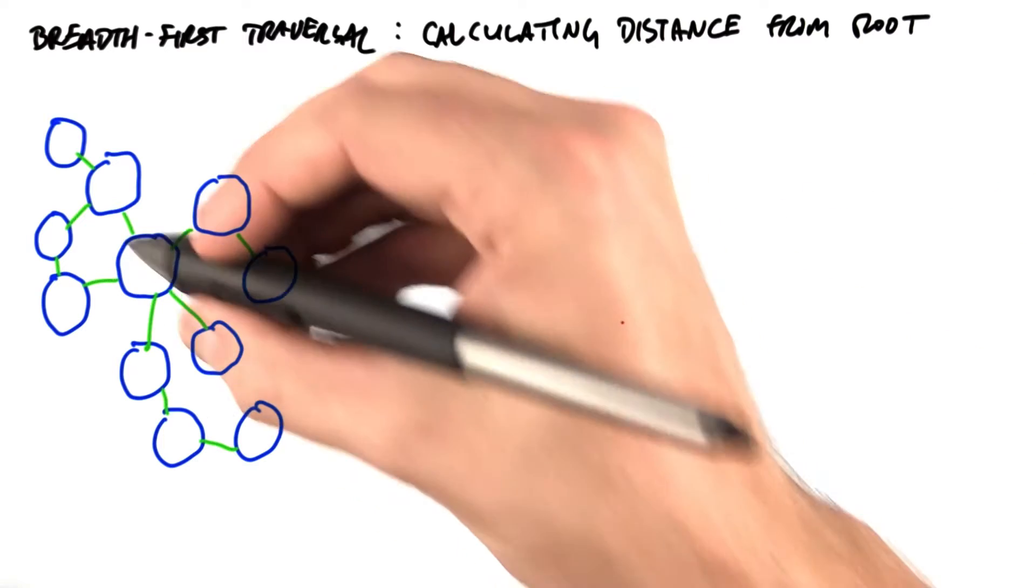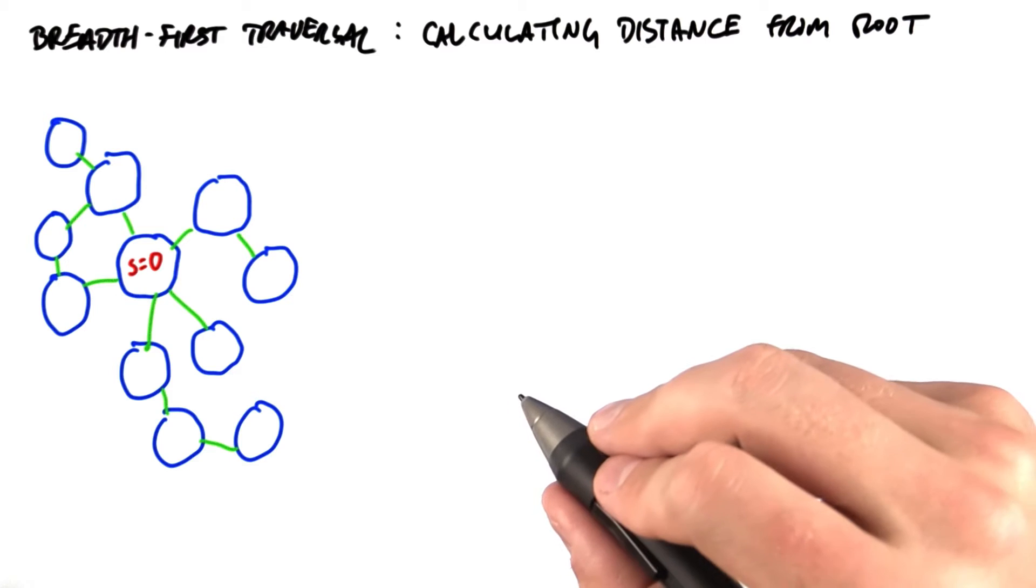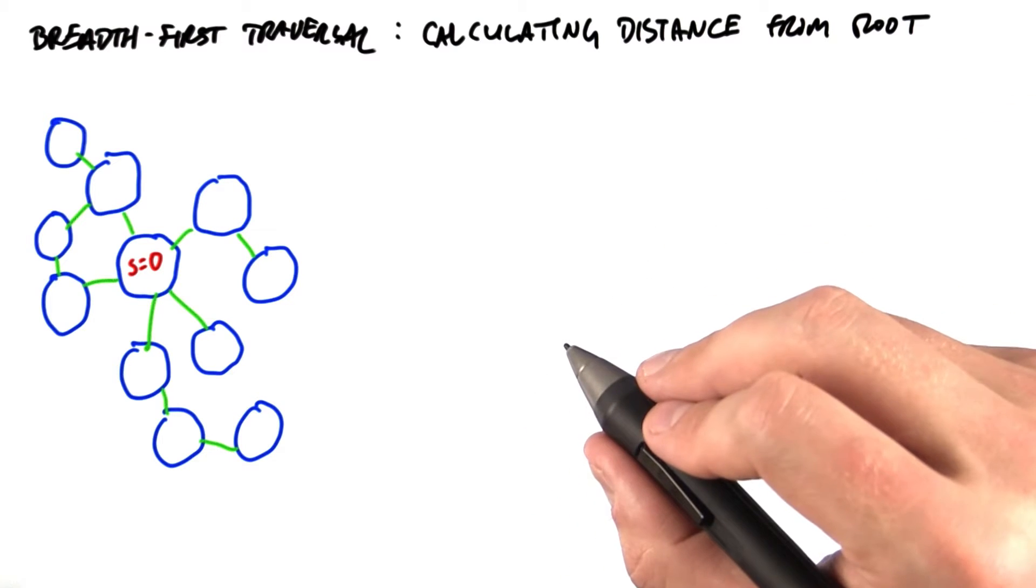We want to start at a specific node, we'll call it s, and then visit every node in the graph and record its distance from s in terms of graph hops. We call this quantity its depth.